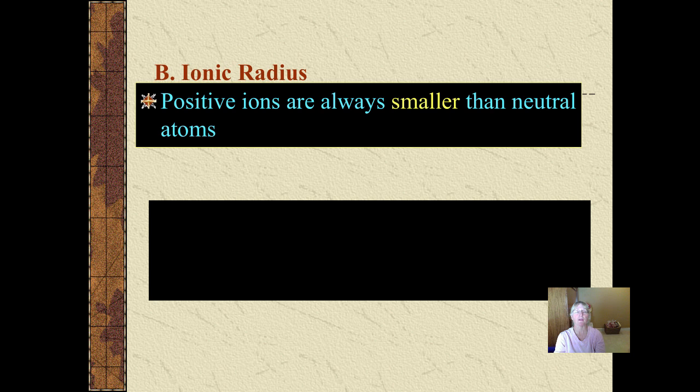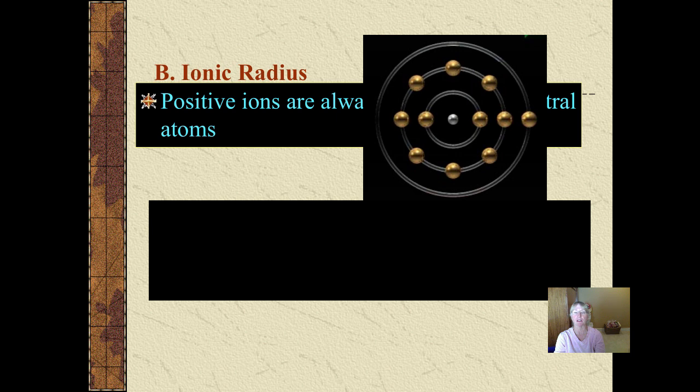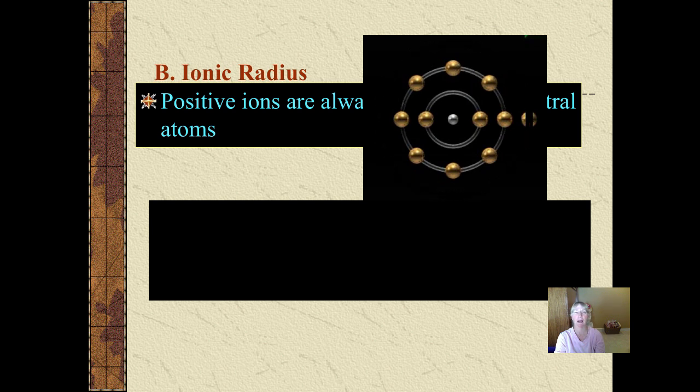go ahead and write in the fact that positive ions are always smaller than their neutral atoms. Now pay close attention to this picture. Here's why. The electron that gets lost is the outermost. Here it goes. Boom. Gone. Outermost energy level is now gone. The atom has turned into a positive ion. Losing electrons makes you more positive. You lose negativity, so you become a plus ion, and you become smaller as well.